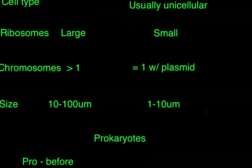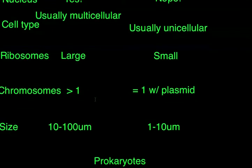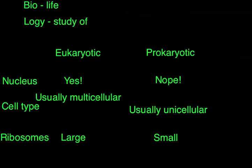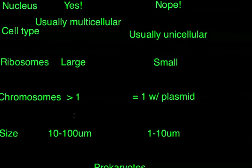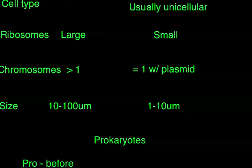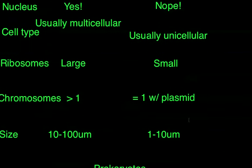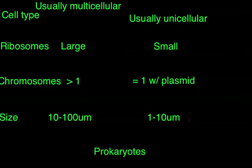When talking about size, remember that this isn't restrictive. Eukaryotic cells can be greater than 10 or greater than 100 micrometers — a micrometer being one millionth of a meter — and can also be smaller than 10. This isn't all-encompassing; it's just the average. For a prokaryotic cell, they're more likely to be one to ten micrometers in length.